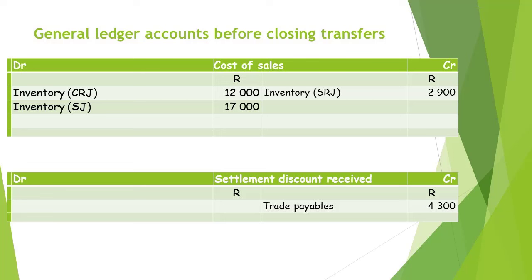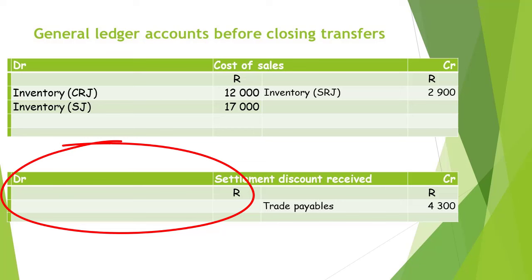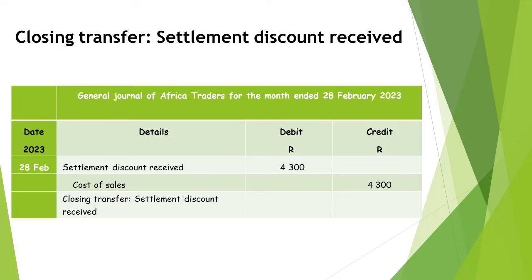Settlement discount received was posted from the cash payments journal. Settlement discount received are recorded in the cash payments journal when the business receives settlement discount from trade creditors for early settlement of accounts. Firstly, we need to do the closing transfer for the settlement discount received account. The settlement discount received account has a credit balance of 4,300 rand, and therefore, to close this account, we will need to make an entry of 4,300 rand on the debit side of the settlement discount received account. The closing transfer will be done in the general journal.